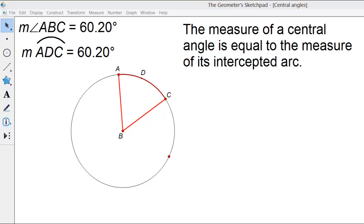In this video we'll be talking about central angles. In our diagram we have a circle, the center of the circle is point B, and I've constructed a central angle, angle ABC.